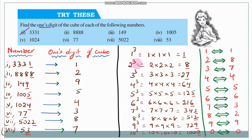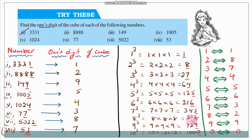1³ = 1×1×1 = 1. 2³ = 2×2×2 = 8. 3³ = 3×3×3 = 27. 4³ = 4×4×4 = 64. 5³ = 5×5×5 = 125. 6³ = 6×6×6 = 216. 7³ = 7×7×7 = 343. 8³ = 8×8×8 = 512. 9³ = 9×9×9 = 729.